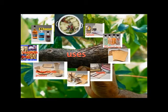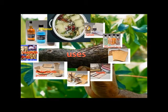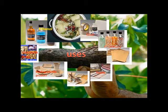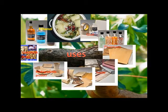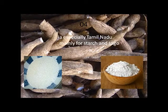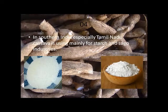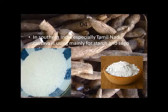Cassava has a wide range of uses like production of ethanol, wood, glue, pharmacy, textile, paper, biodegradable products, and livestock feed. In southern India, cassava is mainly used for starch and sago industries.